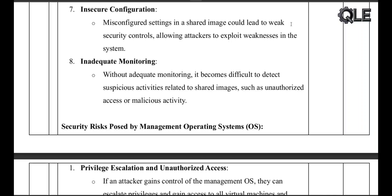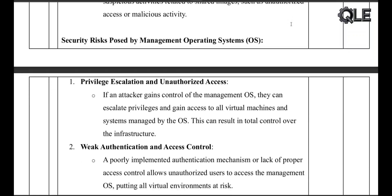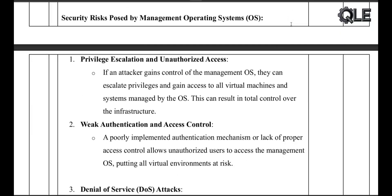No monitoring: if there is no tracking in place, you might never know if the image has been compromised. Now let's talk about management OS, which controls virtual machines and cloud resources. These systems are powerful, but if they are not secure, everything falls apart. Here's why: privilege escalation.